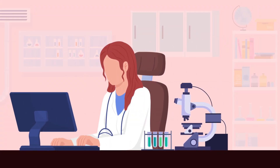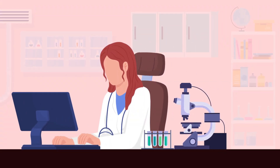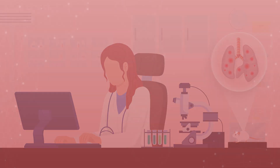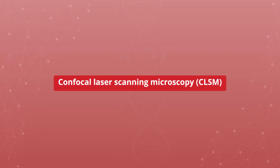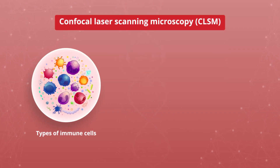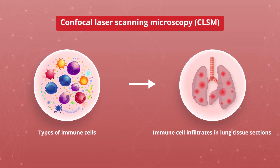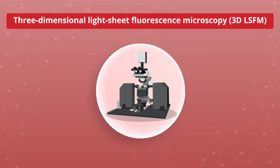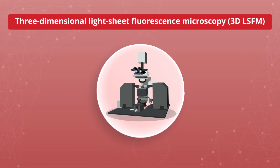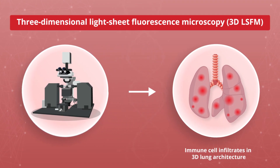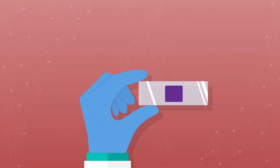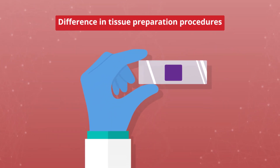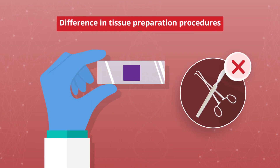Several imaging techniques are used to study immune cell infiltration in asthmatic lungs. For example, Confocal Laser Scanning Microscopy, or CLSM, can identify the types and locations of individual immune cells in lung tissue sections. Meanwhile, Light Sheet Fluorescence Microscopy, or LSFM, can visualize the 3D architecture of lung tissues. While each technique has its own merits, they require different tissue preparation procedures, limiting combinatorial approaches.